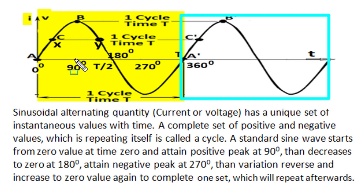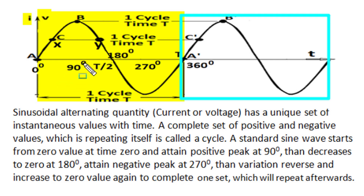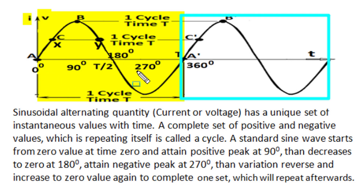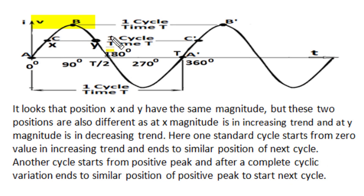A standard sinusoidal wave starts from zero at time instant zero or angle zero, and it attains positive peak after one quarter travel at 90 degrees or T/4. Then it decreases, attains zero value, and after this the symmetrical negative half cycle is repeated. This positive and negative cycle set as one complete cycle repeats again and again.